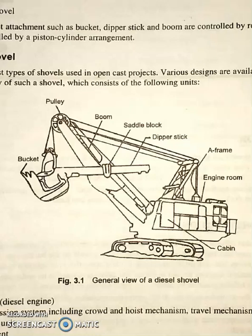Let's start with the diesel shovel. This is the oldest type of shovel used in open-cast projects. Various designs are available nowadays. The figure shows the general view of the shovel, which consists of the following units: first one is prime mover, here a diesel engine is used. Second one is power transmission system including crowd and hoist mechanism, travel mechanism, and swing mechanism. Next one is undercarriage unit, and the first one is front attachment.